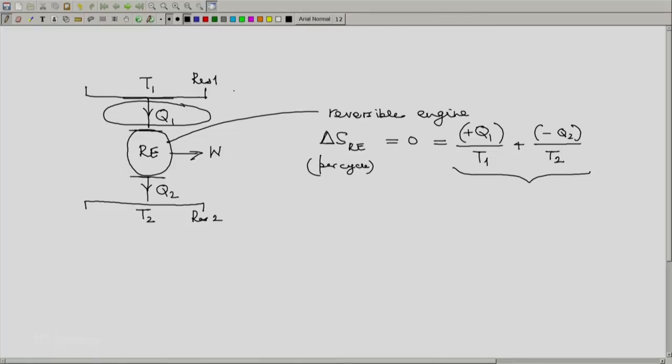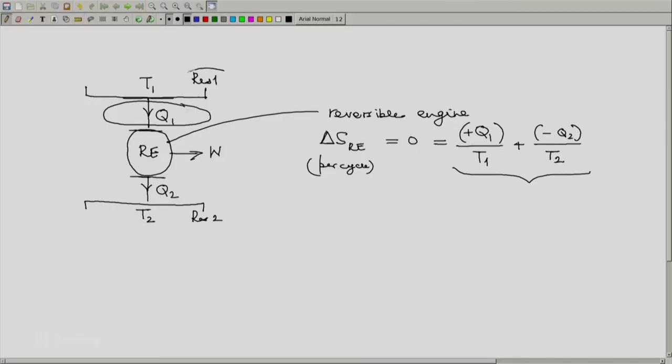And hence if we use our definition of change in entropy, dS is dq by T. Here T is unchanged. So we can write delta S is q absorbed divided by T. So hence for reservoir 1, we can write delta S reservoir 1 is heat absorbed by reservoir 1, that would be minus q1 divided by T1.